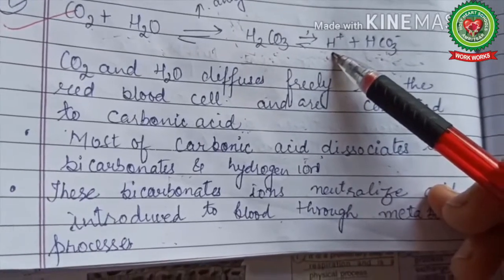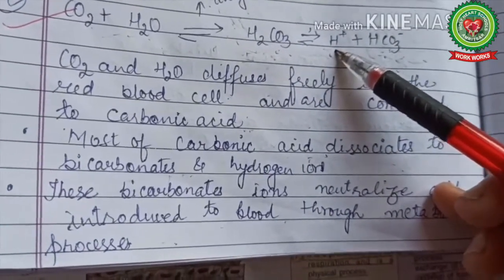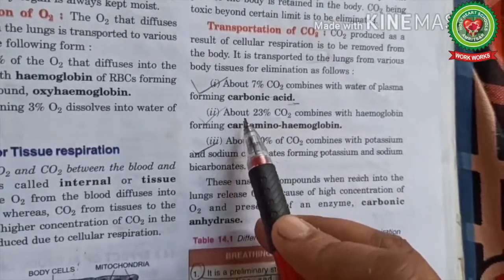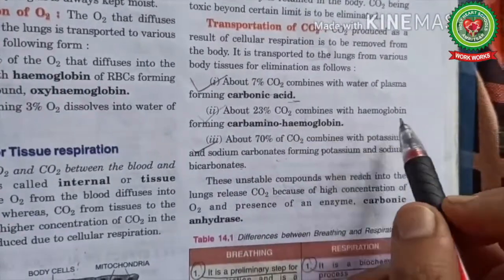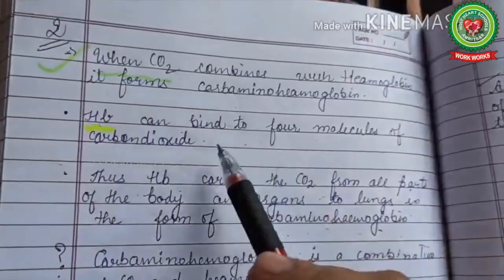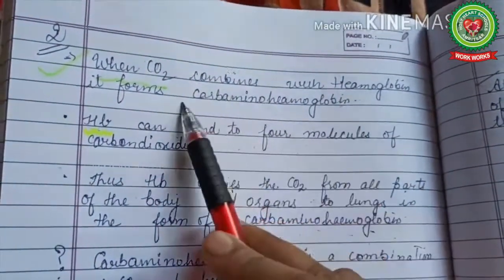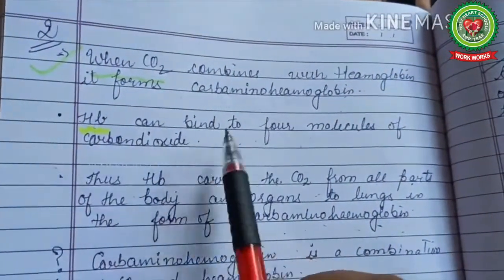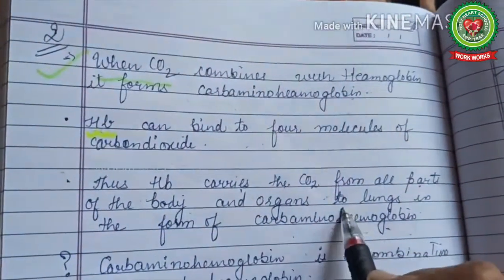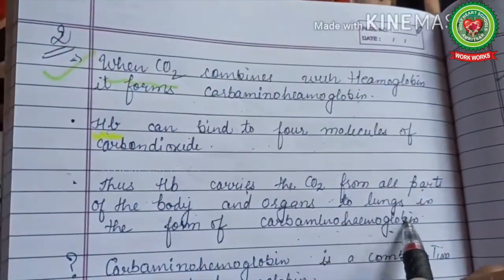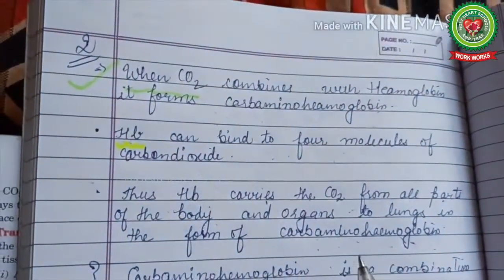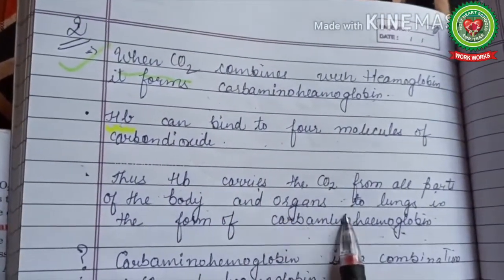About 23% of carbon dioxide combines with hemoglobin forming carbamino hemoglobin. When carbon dioxide combines with hemoglobin, it forms carbamino hemoglobin. Hemoglobin can bind to 4 molecules of carbon dioxide. Thus, hemoglobin carries carbon dioxide from all parts of the body and organs to the lungs in the form of carbamino hemoglobin.